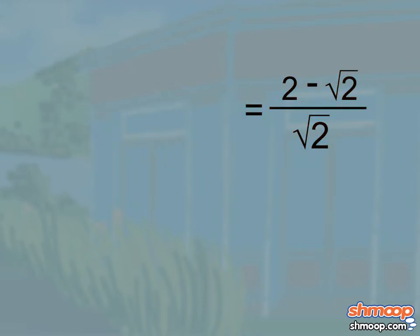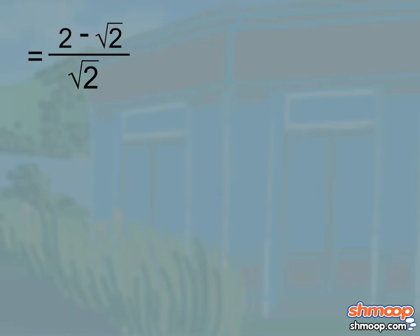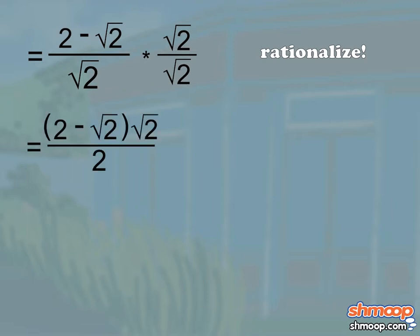We can't have radicals in the denominator, so we will rationalize it by multiplying the fraction by root two over root two. This gives us the fraction root two times the quantity two minus root two all over two. And to simplify,